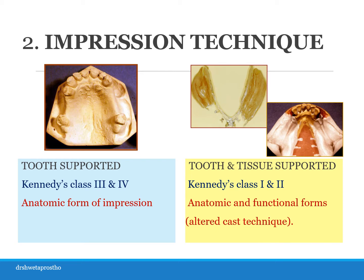On the other hand, if we have to make a physiologic or functional impression, we record the tissues or the mucosa in a physiologic or functional state, using a free-flowing impression material like zinc oxide eugenol impression paste or mouth temperature waxes. We record the remaining teeth in the static or anatomic manner over it. So we take two impressions for class 1 and class 2 Kennedy's cases. If this is done after framework fabrication, it is called the altered cast technique or corrected cast technique, where we change the master cast after recording the tissues, as seen in this picture.